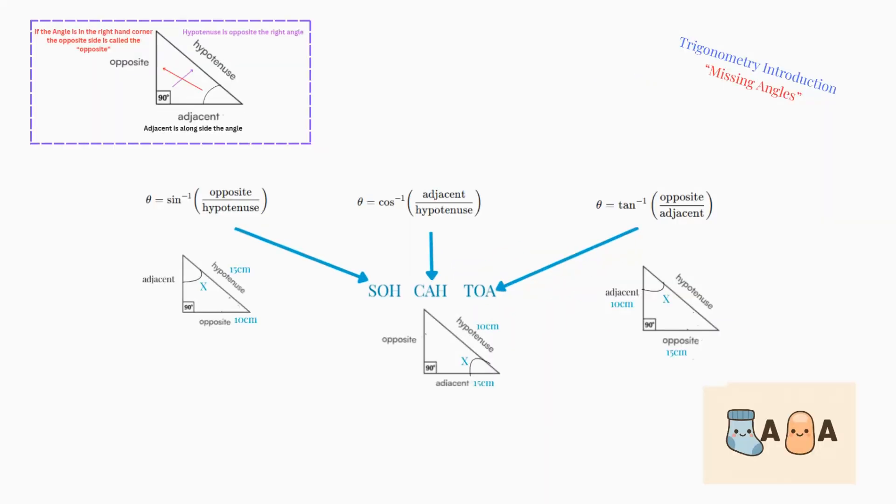This is an introduction into finding the missing angles of a right-angled triangle in trigonometry. A right-angled triangle is obviously 90 degrees here in the corner. And we have our angle.